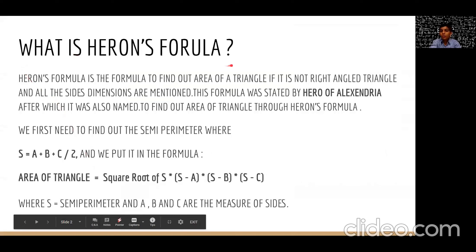What is Heron's formula? Heron's formula is the formula to find out the area of the triangle if it's not right angled and all the size dimensions are mentioned. It means that if you don't know the base and the height of a triangle, we can use Heron's formula to find out the area of the triangle. This formula was stated by University of Alexandria after which it was also named.